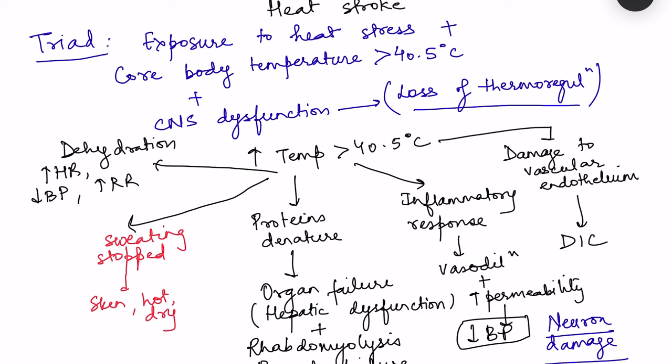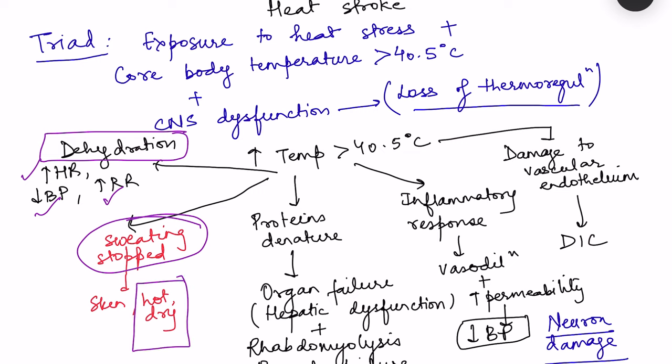Features of heat stroke include severe dehydration, causing increased heart rate, decreased blood pressure, and increased respiratory rate. Eventually sweating stops due to severe dehydration and CNS-mediated loss of thermoregulatory mechanisms, so the skin becomes hot and dry — in contrast to the cold and wet skin seen when sweating profusely. At temperatures above 40.5 degrees Celsius, body proteins begin to denature.